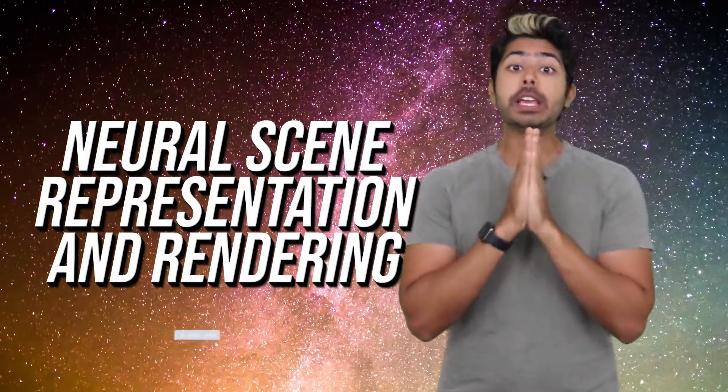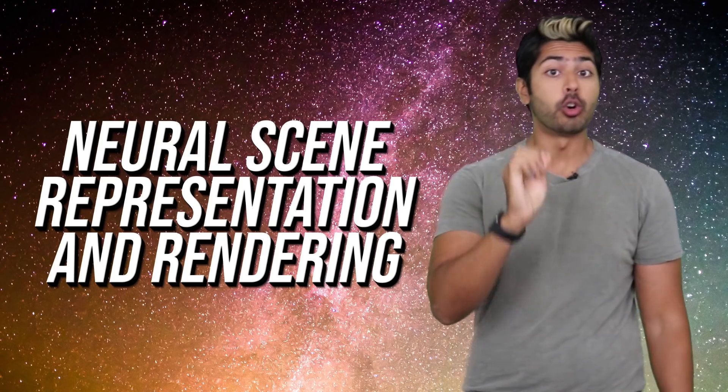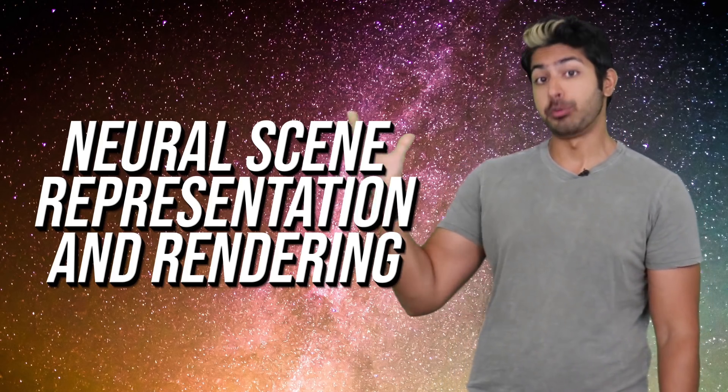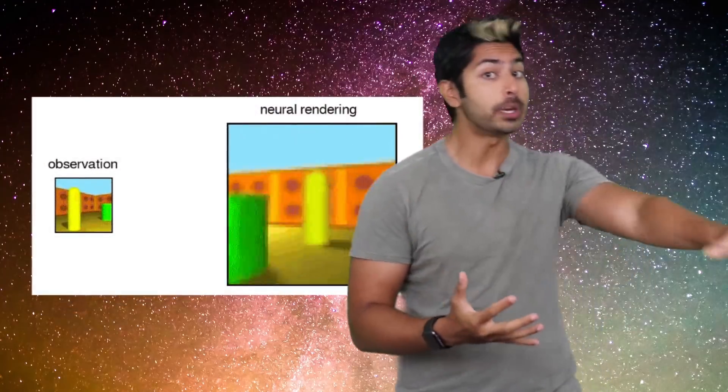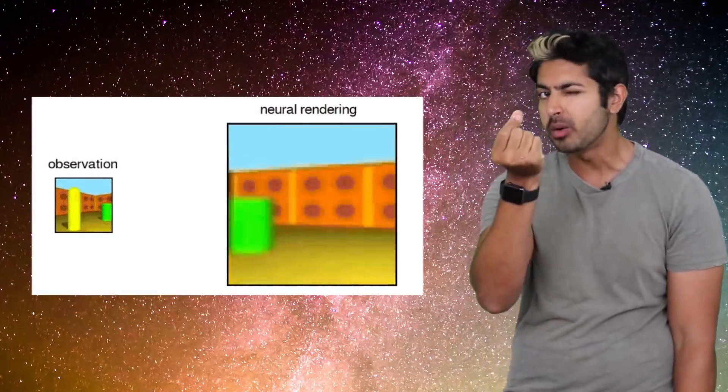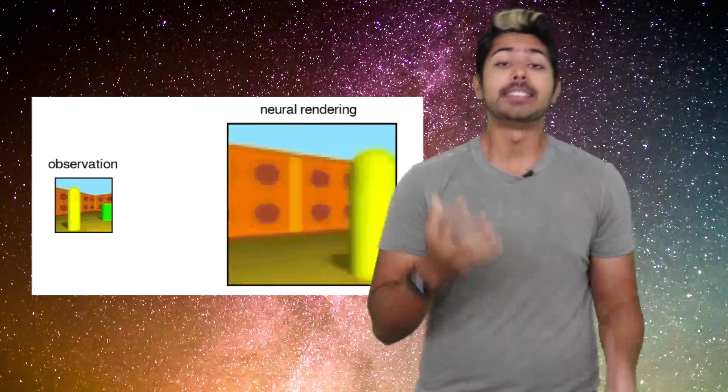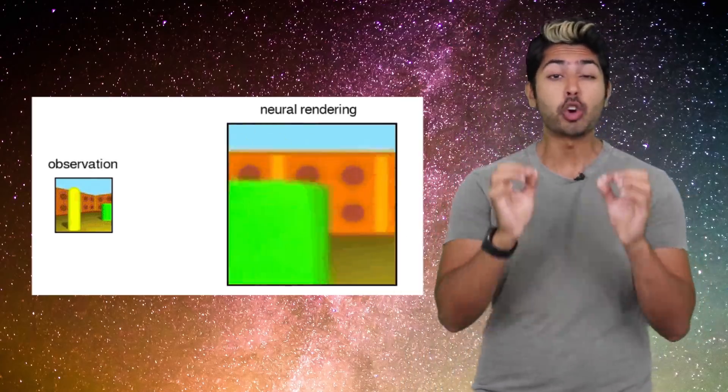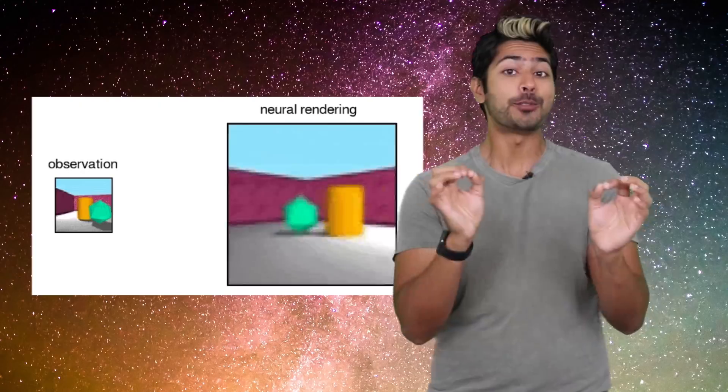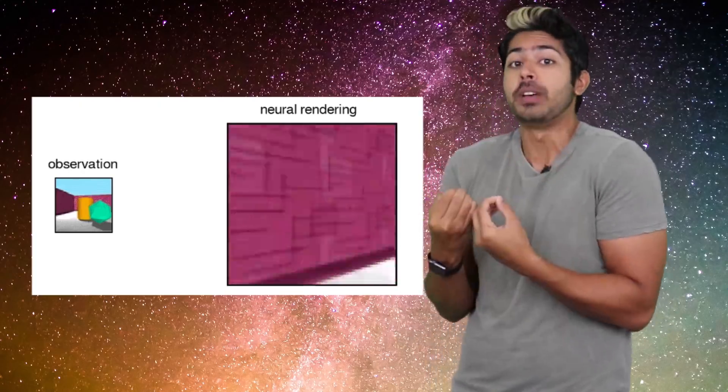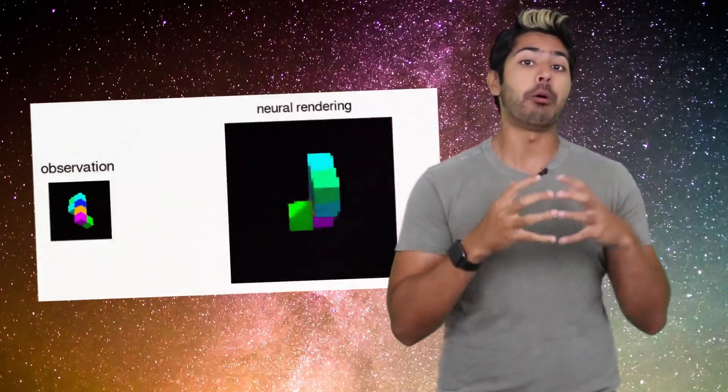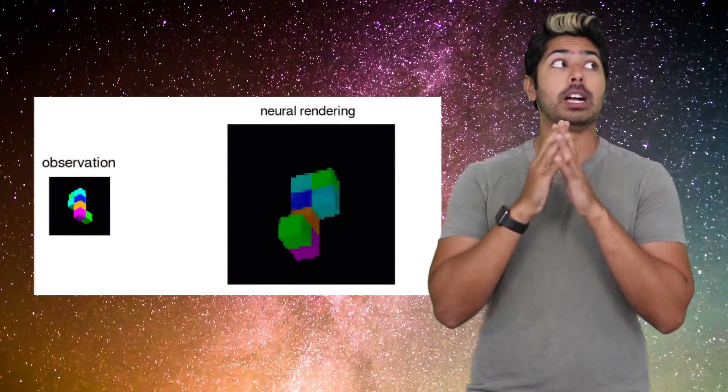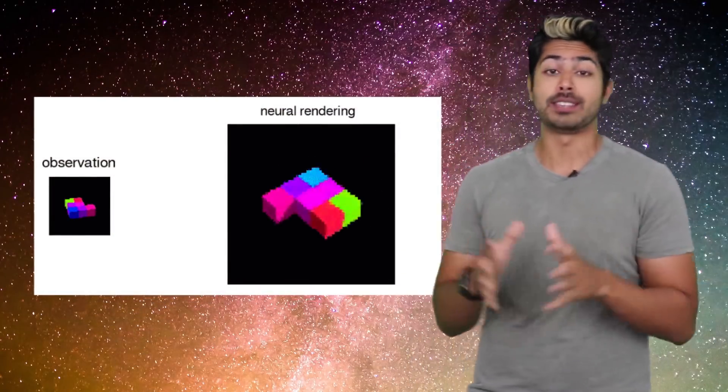and DeepMind just dropped a very impressive paper called Neural Scene Representations and Rendering. Their AI is capable of rendering an entire 3D environment from just one or a few input images. And to make it even more impressive, it learned how to do this without any labels. It just learned from data it obtained itself from exploring different 3D environments. I'll explain how it works in this video, since there are a lot of applications for this technology.